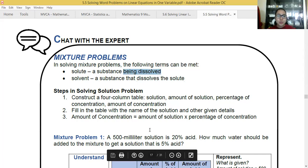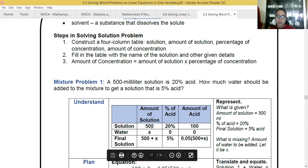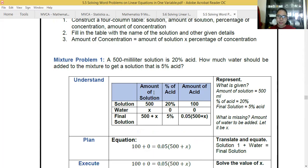What do we need in the table? We still need to have some table in the mixture problem. We will have the amount of solution, the next one is the percentage of acid, and the last is the amount of acid. How do we solve for the amount of acid? The amount of acid is solved by multiplying the amount of solution and the percentage of acid.